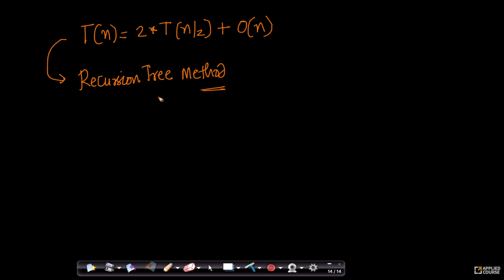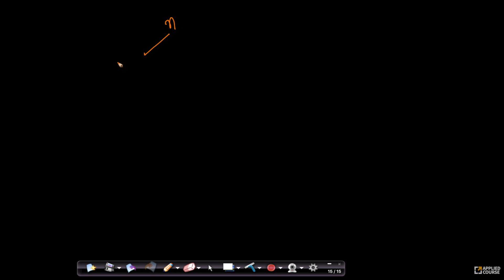First we will do it intuitively; in the next sections we will go into the details of the recursion tree method and the master method. But let us try to understand the intuition behind it. Suppose we have an array of size n — we break it up into arrays of size n/2 and n/2, and to merge these two, we are taking O(n).